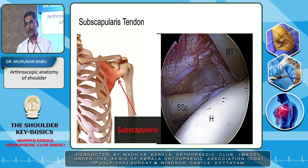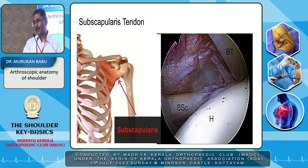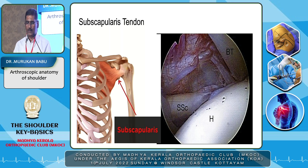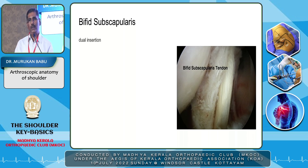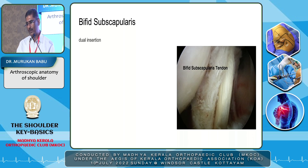Coming to the second part of this position — after the anterosuperior labrum, then the subscapularis tendon. You probe the subscapularis tendon in the intra-articular part up to the insertion at the lesser tuberosity. Sometimes you may see a bifid subscapularis — that is the dual insertion into the lesser tuberosity. You can see two bands, but sometimes you may mistake this for a torn tendon.